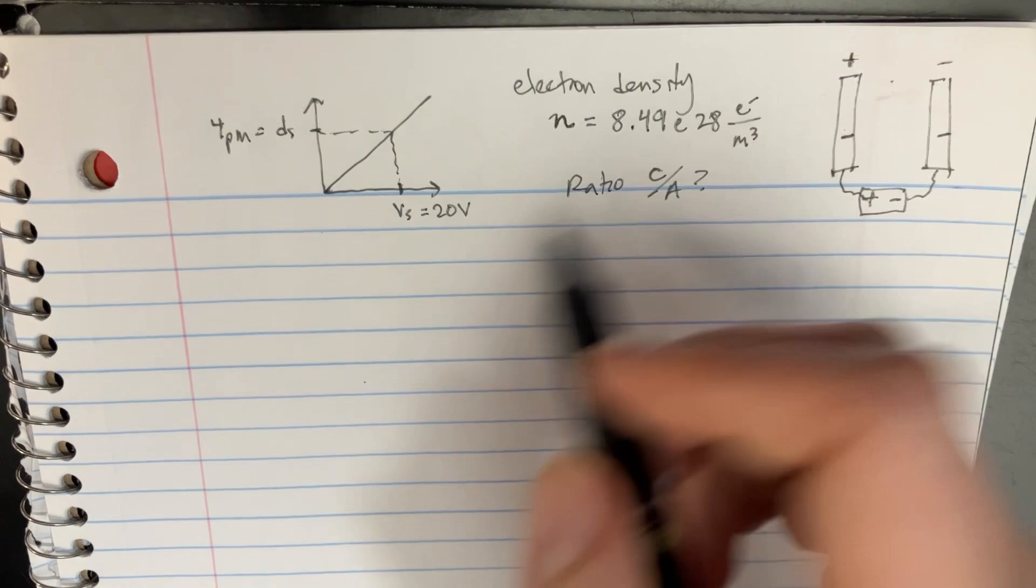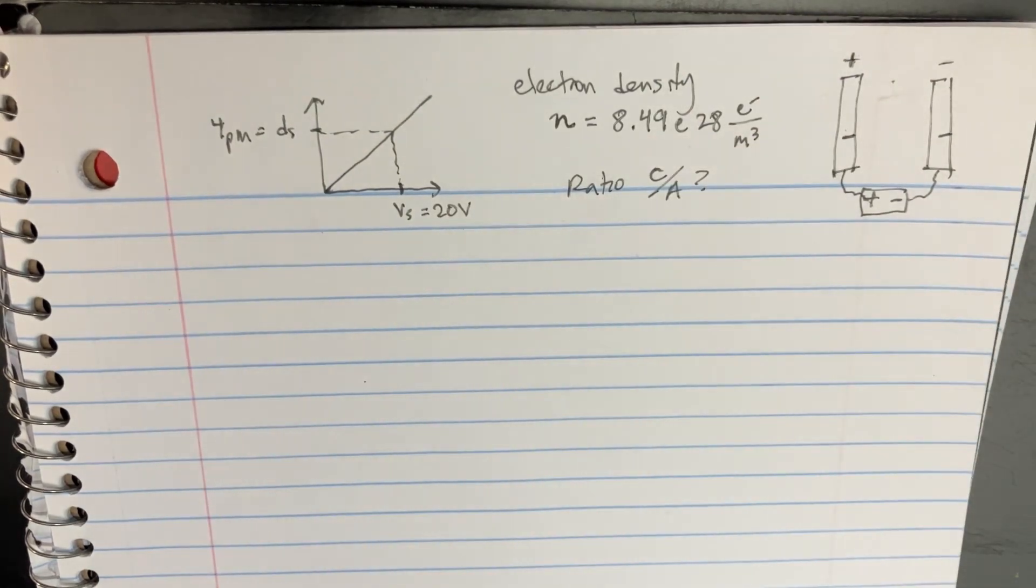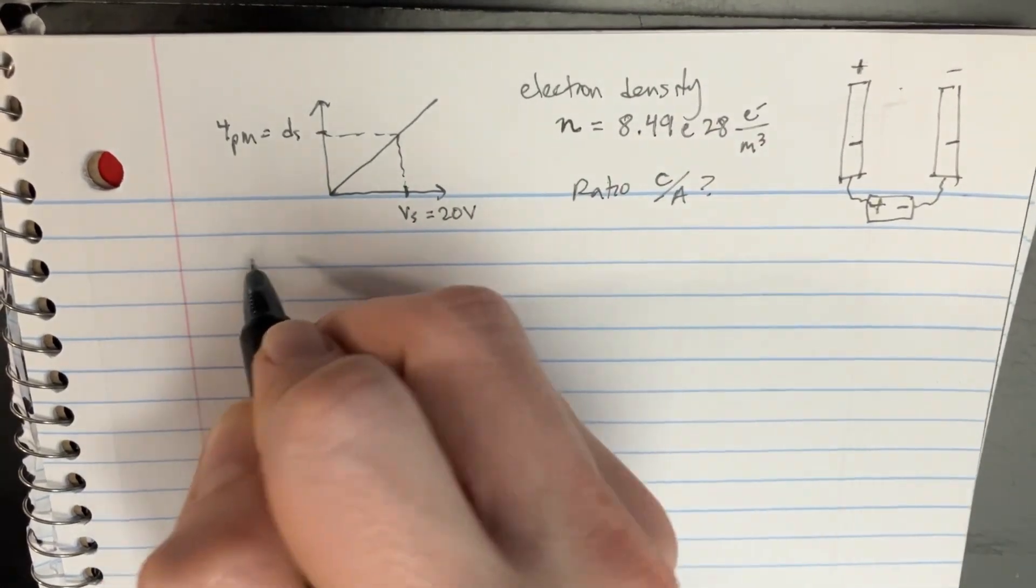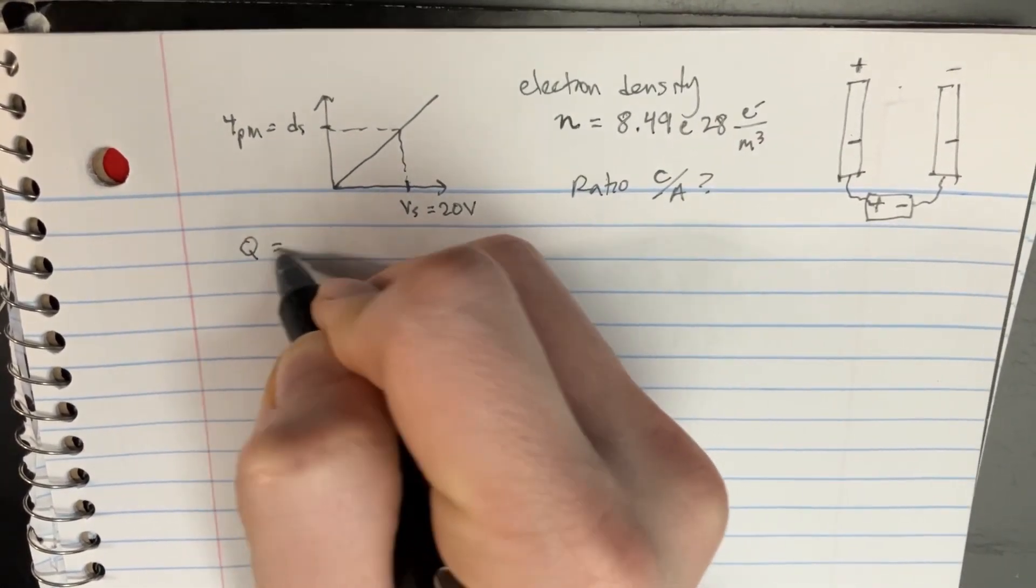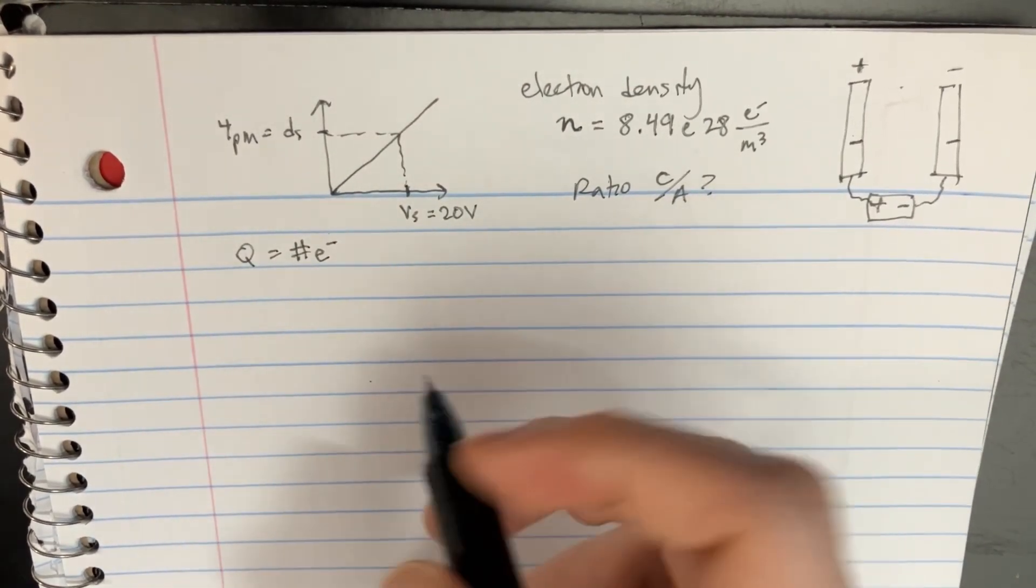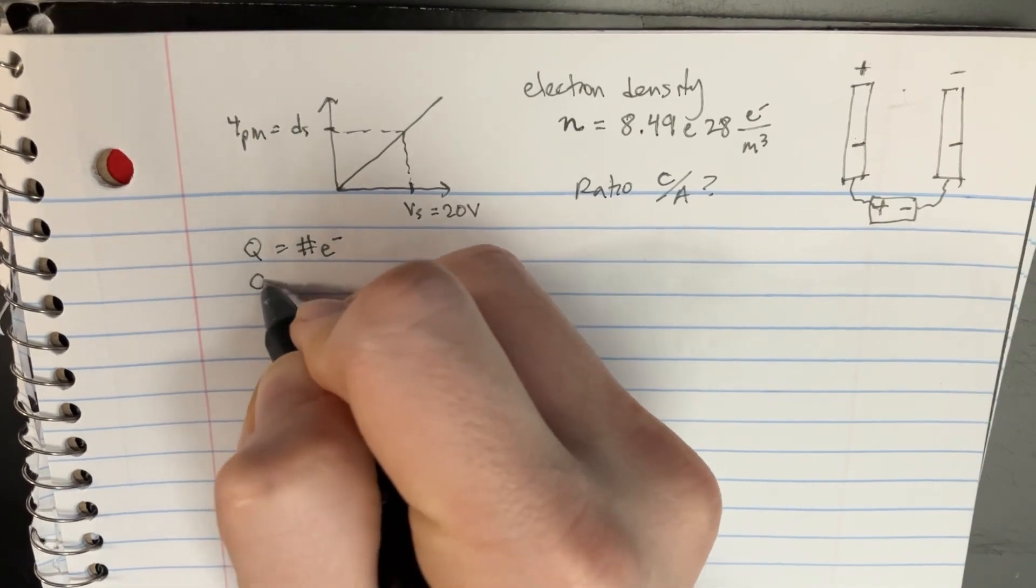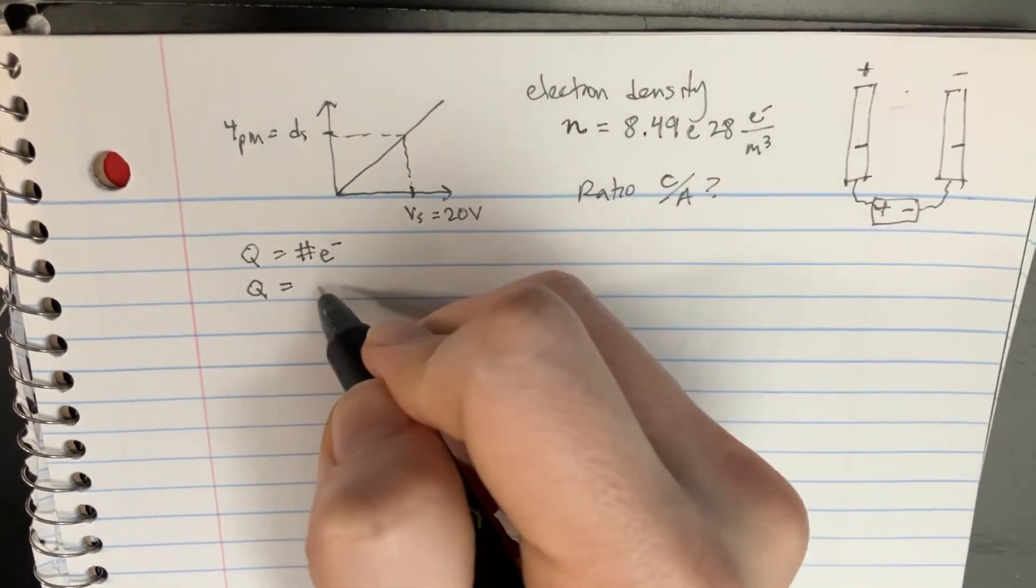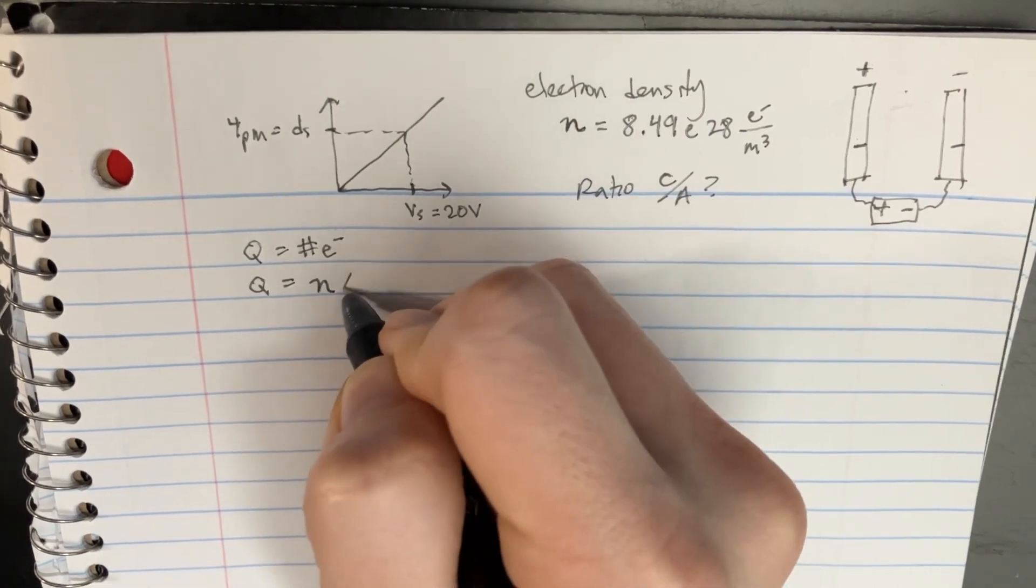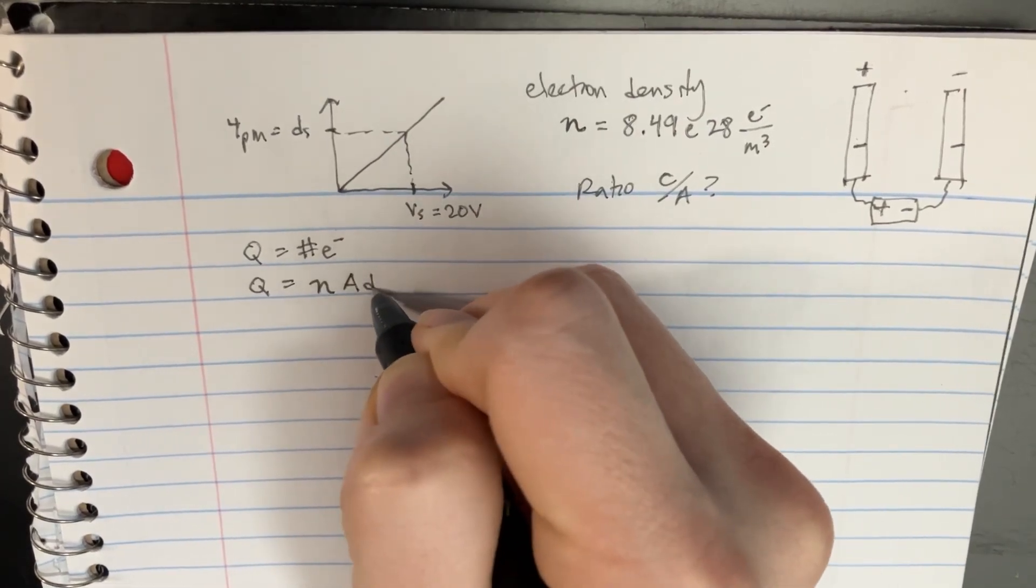What is electron density? Well, let's recall that Q is going to be equal to the number of electrons. We can also say that Q is going to be equal to this n A d, that's the density, this is the depth where they're coming from.